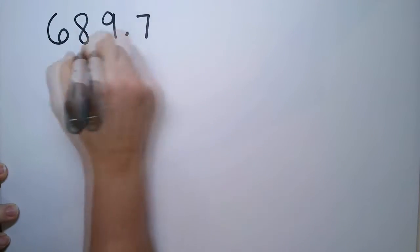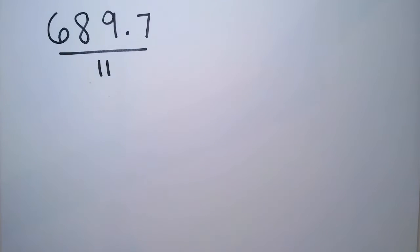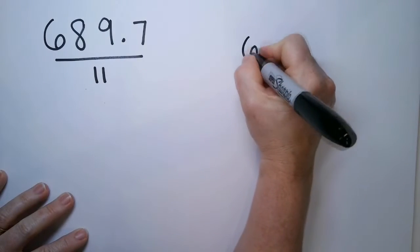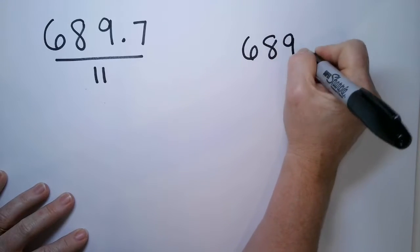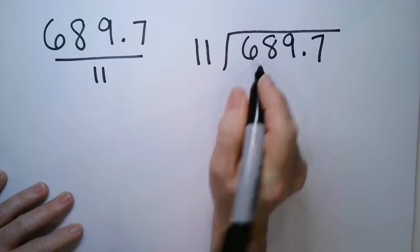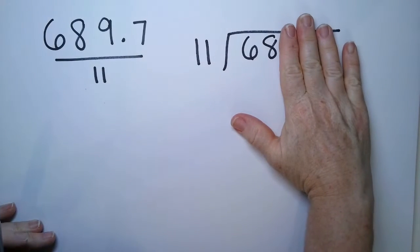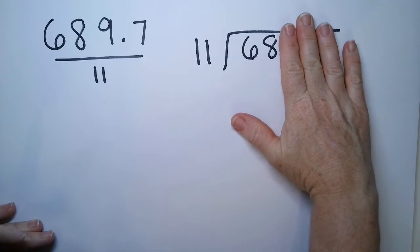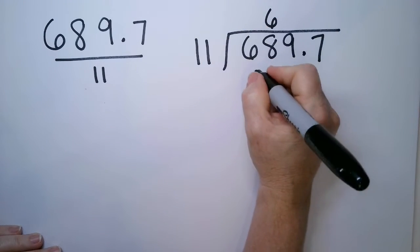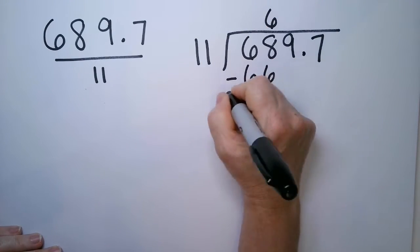689.7 divided by 11. The numerator always goes in the box: 689.7, and here's our 11. So 11 into 68, that is a six. 6 times 11 is 66, and we just take the difference.